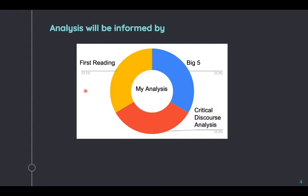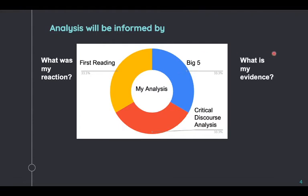Our first reading is going to be: what was my reaction to the text? We do that first, and then with big five I think about what evidence can I use that is in the text. And then critical discourse analysis gives me: what does it say about society? What point can I make about the text?